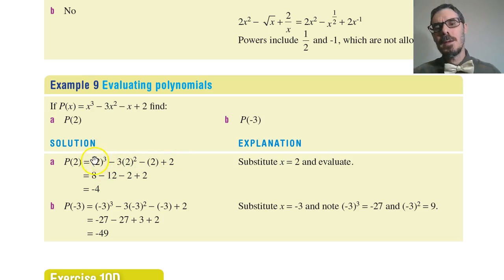Carefully evaluate. 2 cubed is 8. 2 squared is 4 times 3 is 12. And do the maths.